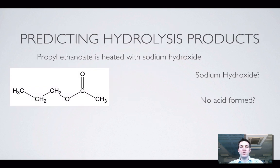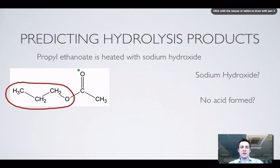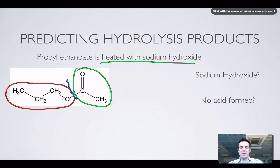Bearing in mind that we make esters from alcohols and carboxylic acids, let's have a look at what we'll make when we break them down. We're told that propyl ethanoate — here's the propyl part, the bit that looks like the alcohol propanol, and ethanoate because this bit looks like the carboxylic acid — is heated with sodium hydroxide, which is how we hydrolyze esters.